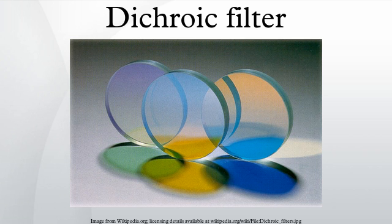Artistic glass jewelry is occasionally fabricated to behave as a dichroic filter. Because the wavelength of light selected by the filter varies with the angle of incidence of the light, such jewelry often has an iridescent effect, changing color as the earrings swing.